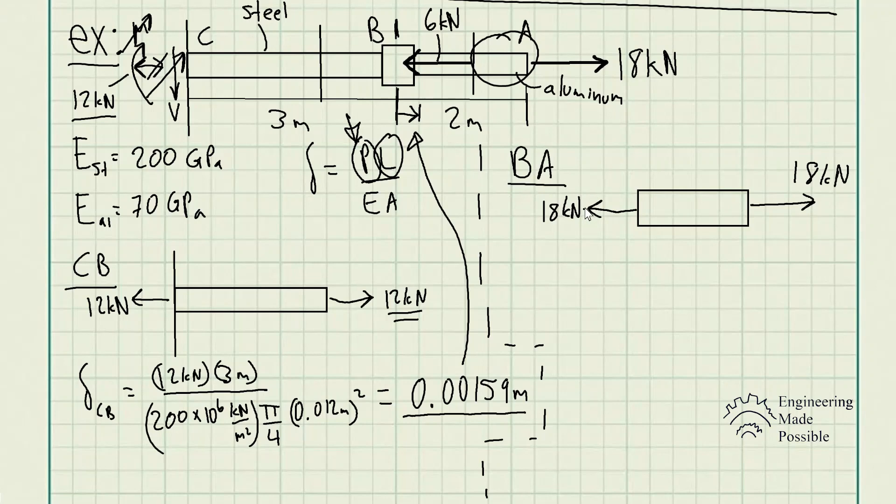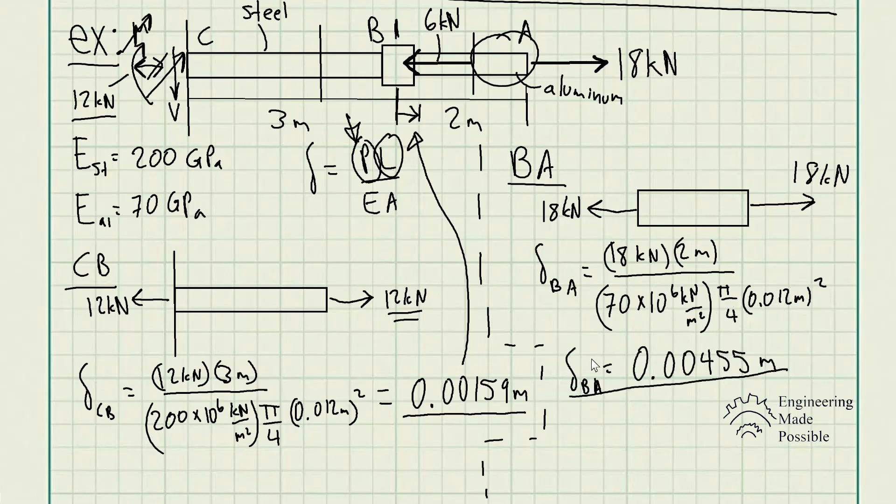In this case, this is going to be the force that we're going to plug in for our deformation equation of the rod BA. So we have the external load of 18 kilonewtons times 2 meters divided by 70 times 10 to the 6th power kilopascals or kilonewtons per meter squared times the cross-sectional area, which gives us a deformation of 0.00455 meters or 4.55 millimeters.